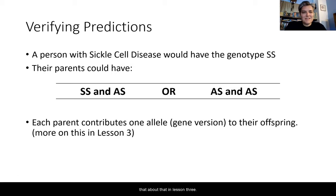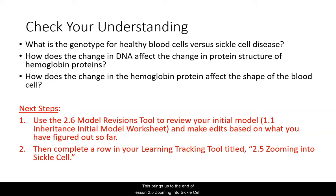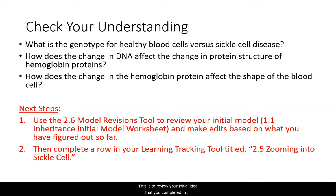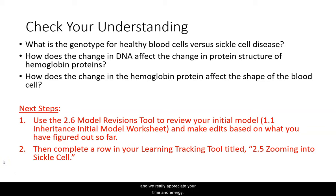This brings us to the end of Lesson 2.5, Zooming into Sickle Cell. Check your understanding on the three questions: what is the genotype for healthy blood cells versus sickle cell disease; how does the change in DNA affect the protein structure of hemoglobin; and how does the change in hemoglobin protein affect the shape of the blood cell. Your next steps are to move on to 2.6, Model Revision Tool, to review and edit your initial inheritance model from 1.1, and then complete a row on your learning tracking tool titled 2.5 Zooming into Sickle Cell. Thank you so much for all your hard work.